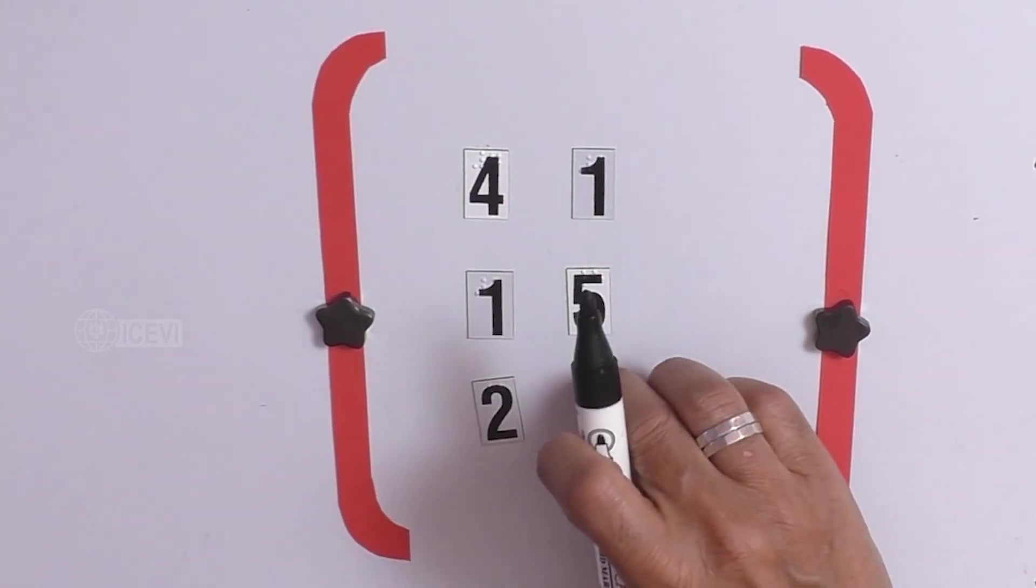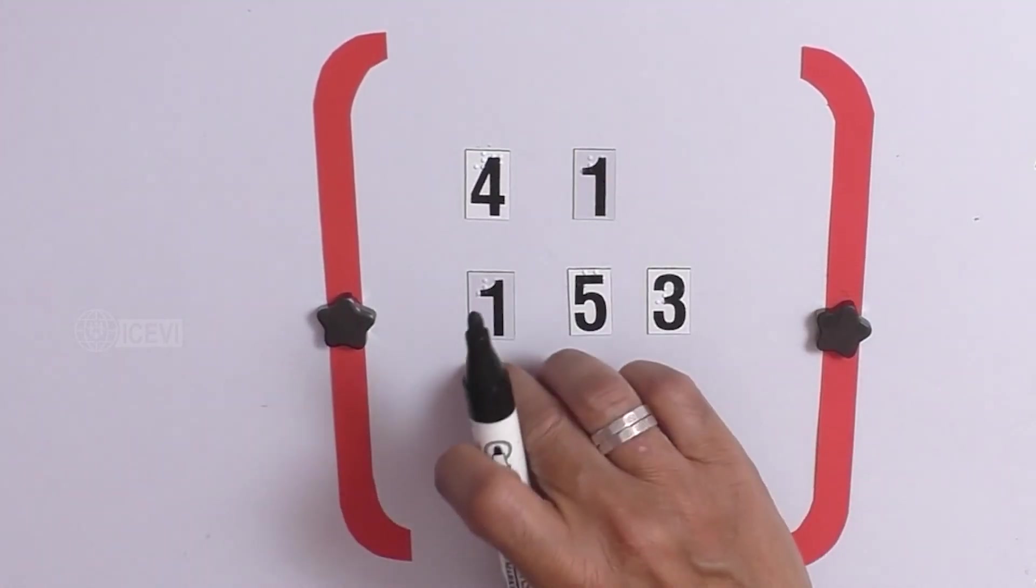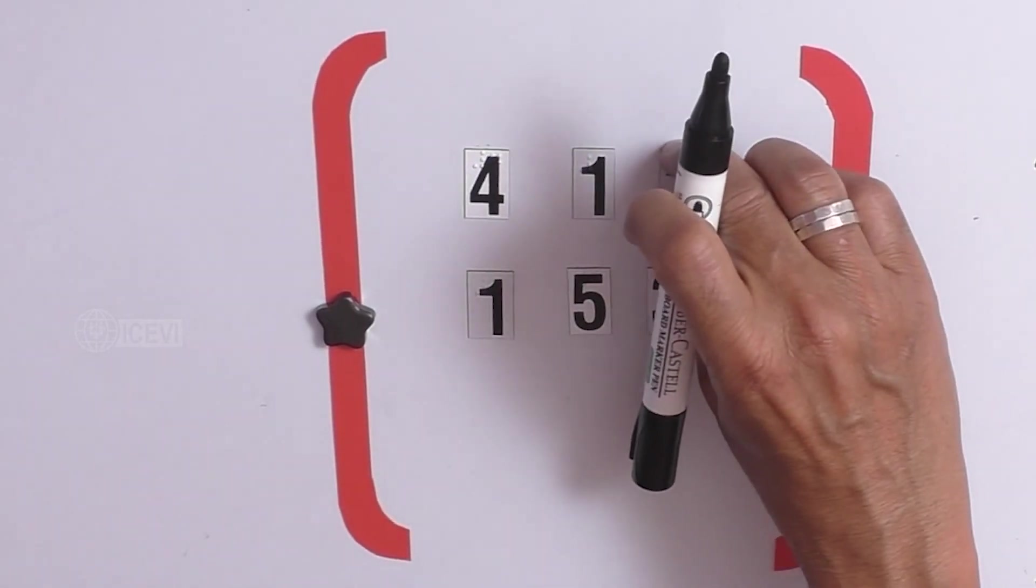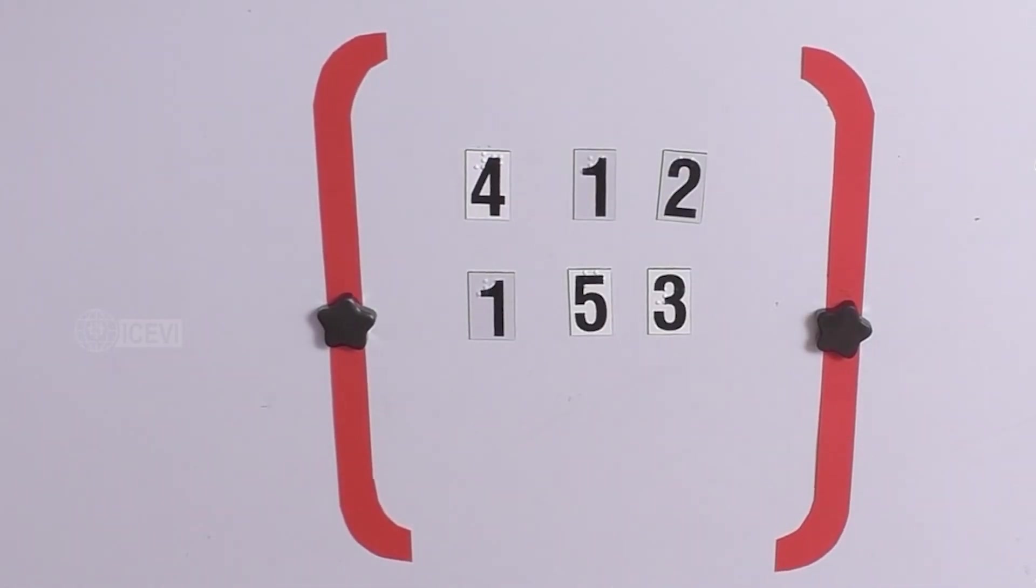And if we put the matrix like this, then it is 2 rows and 3 columns. In any way, it looks like a rectangle. It looks like a rectangle. So, we call that as a rectangular matrix.